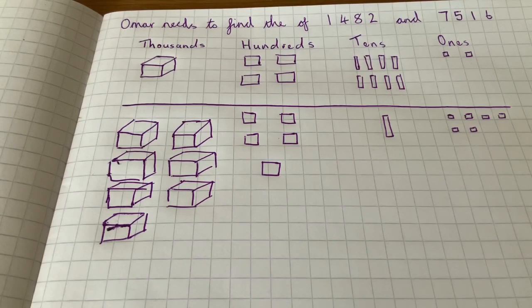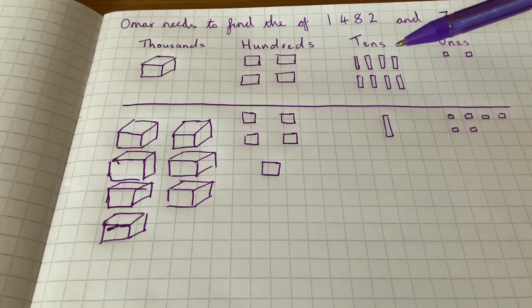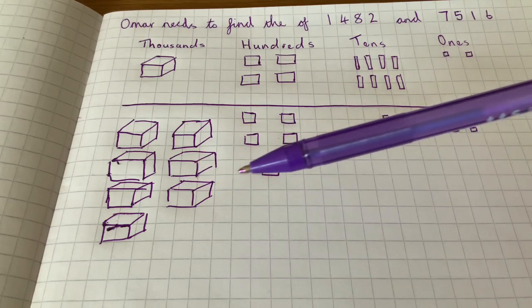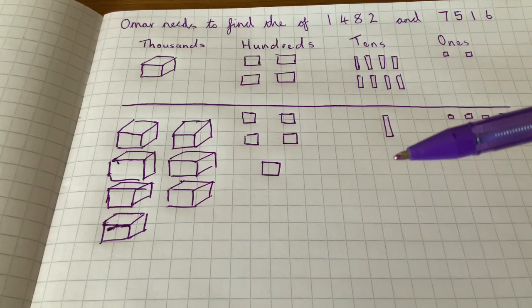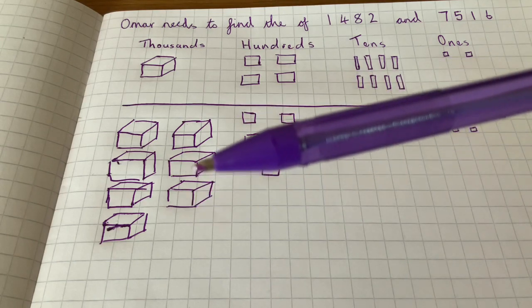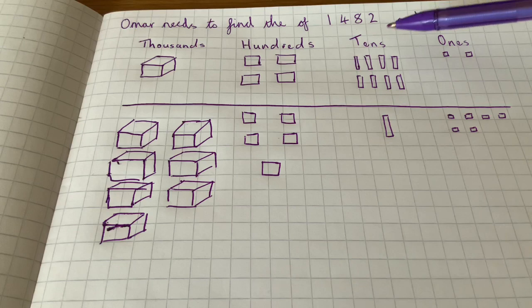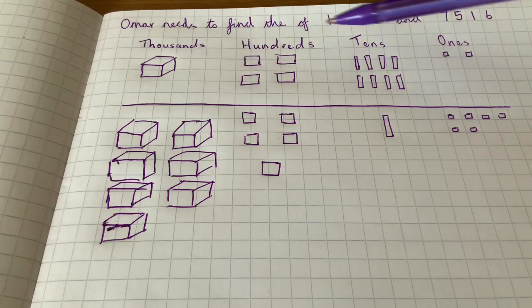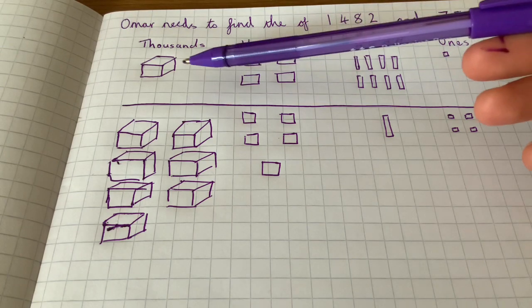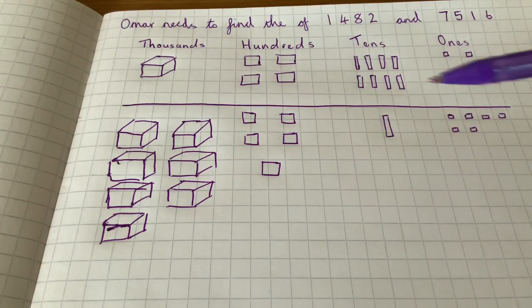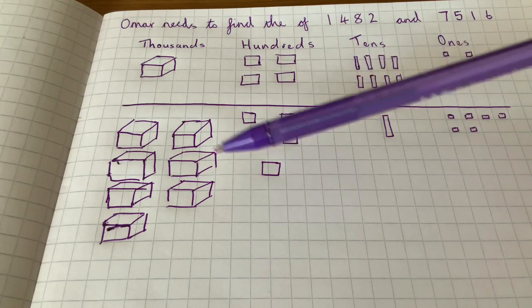So to show this I have created the ones, tens, hundreds, and thousands, so we can see here we've got 1,482, and below here we have 7,516. So these are being represented, you can see my individual ones here and my lines of tens, my bases of hundreds, and you can see my cubes of a thousand. If you want to choose different shapes, that's fine, but this is the way that we would normally do it in school.